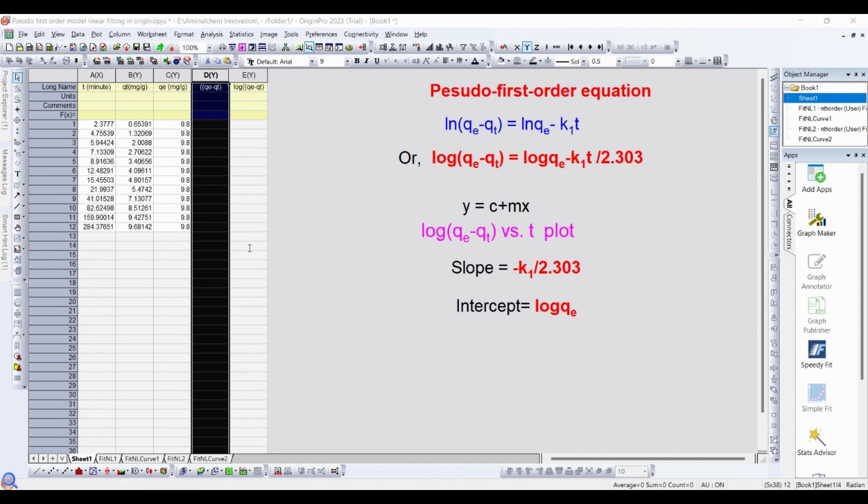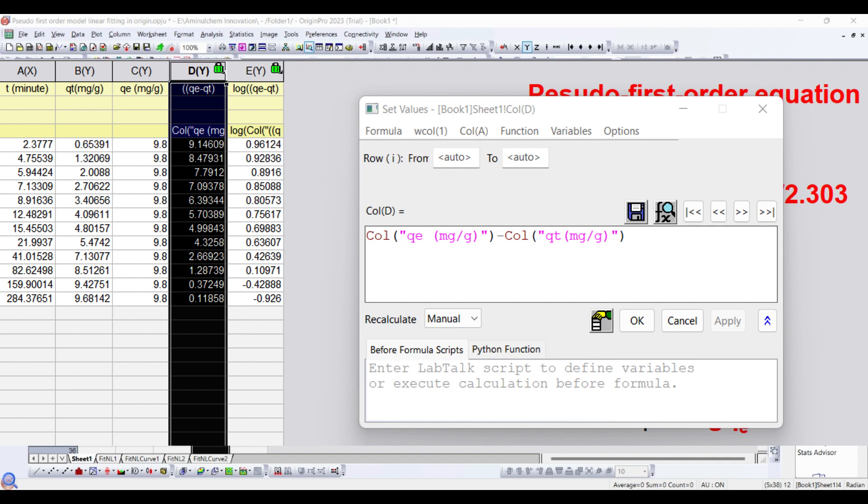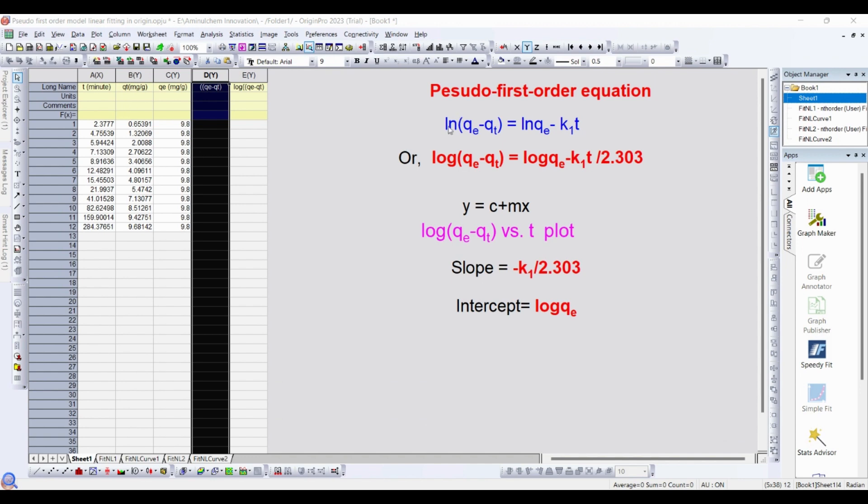Set column values. It will be qe which is column C, column C minus column B. Then apply. Then okay.